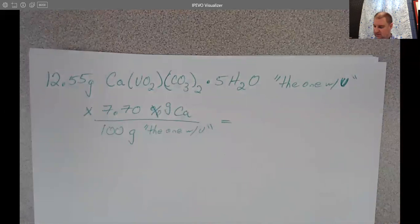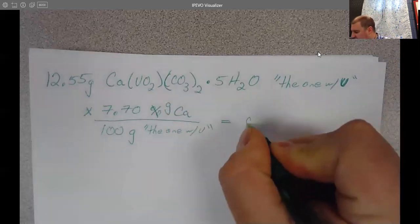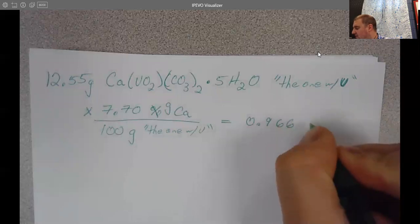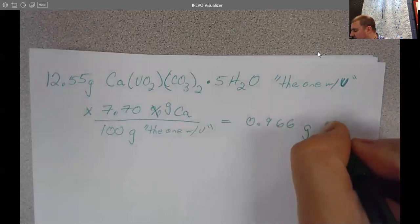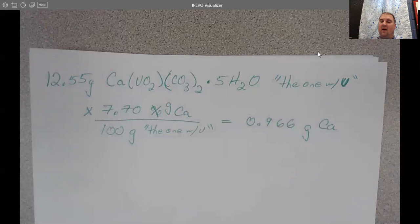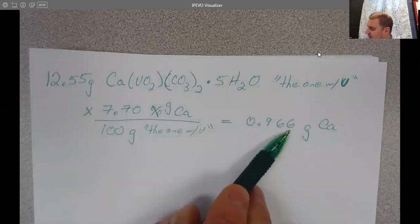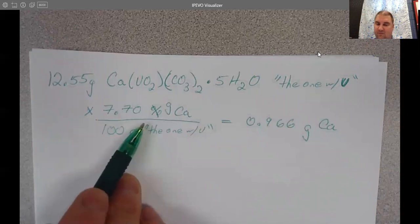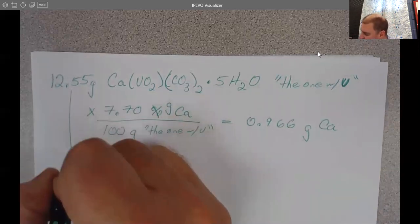So this then is a conversion factor, and we can just plug this into a calculator. Plug in 12.55 times 7.70 divided by 100 gives me 0.966 grams of calcium. Now, I rounded here to three sig figs, because my percentage only has three significant figures.